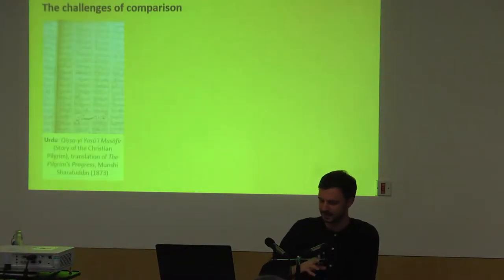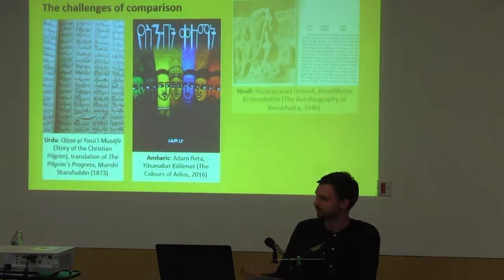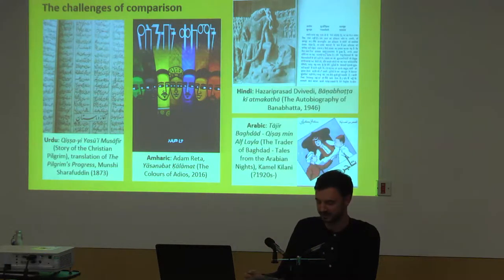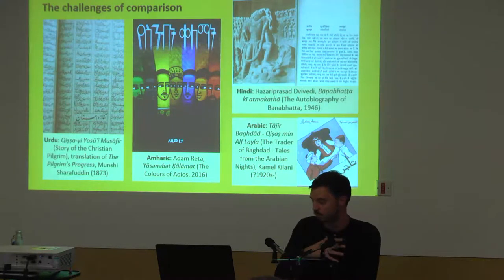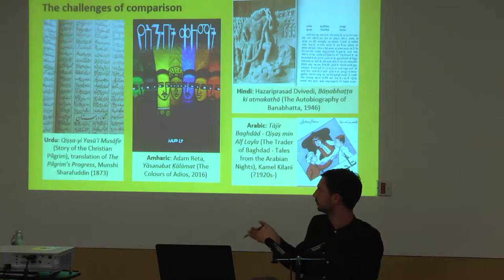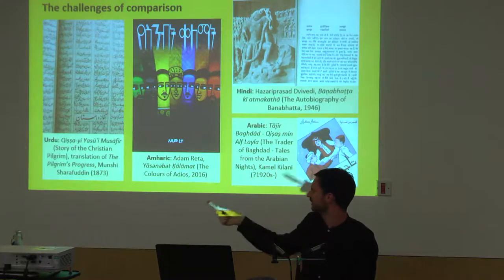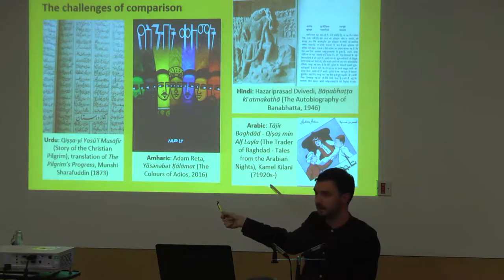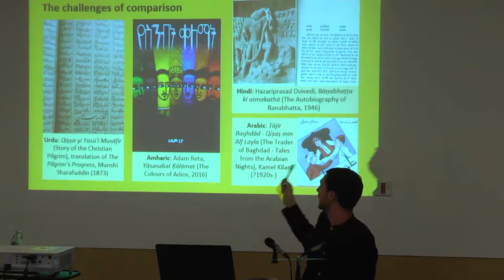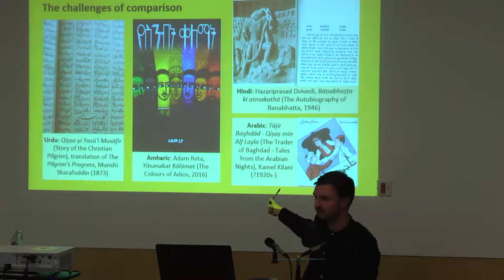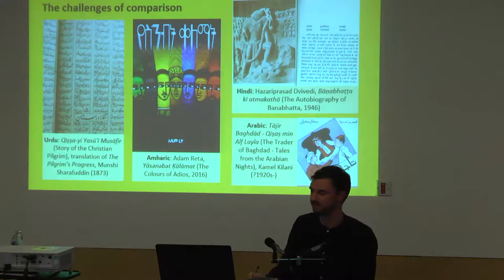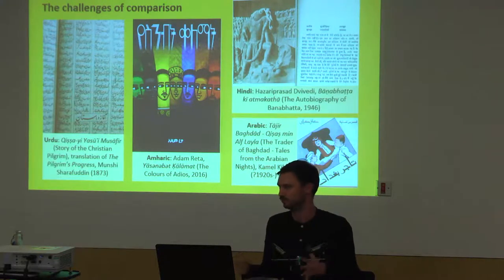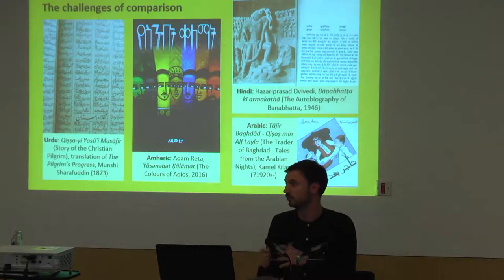Primarily amongst these challenges is the inevitable asymmetry of knowledge that comes with a group project like this. We work on three distinct regions with at least six principal research languages, which means we have a wonderful array of resources, as this slide illustrates. We have translations of John Bunyan's Pilgrim's Progress into Urdu from the 1870s, very modern Amharic literature from Ethiopia, Hindi historical fiction from the 1940s, and Arabic children's stories from Egypt in the 1920s. This gives you a picture of the languages, genres and breadth of what we're doing.